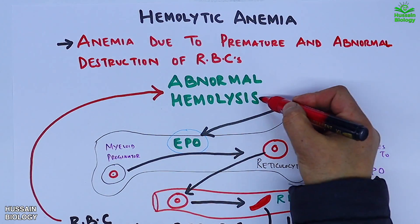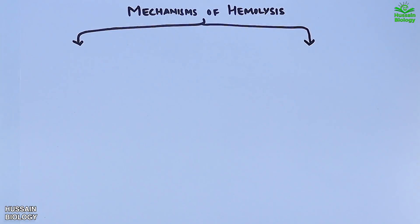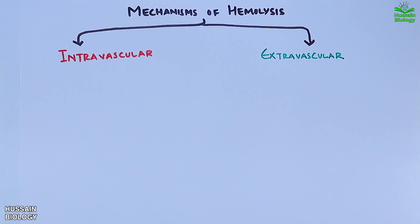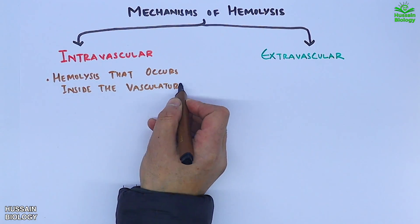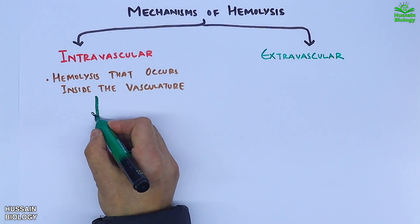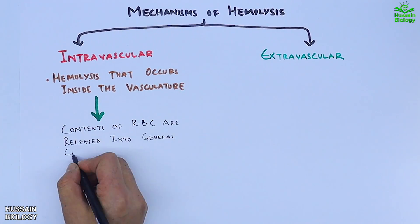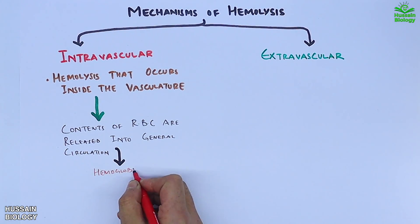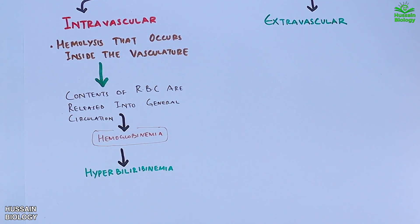Abnormal hemolysis is termed hemolytic anemia. The mechanism of hemolysis is either intravascular or extravascular. In intravascular hemolysis, the hemolysis occurs inside the vasculature, and the contents of RBCs are released into the general circulation, leading to hemoglobinemia, which in turn leads to hyperbilirubinemia.